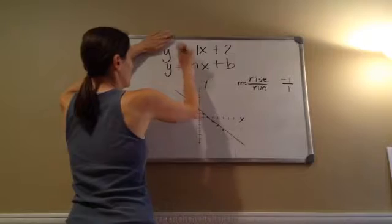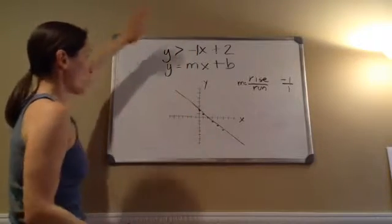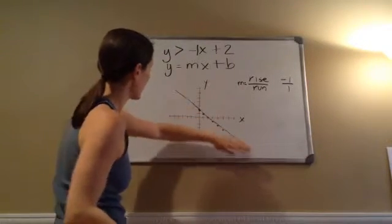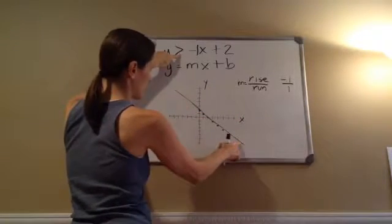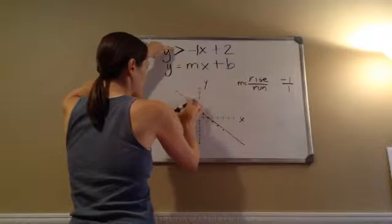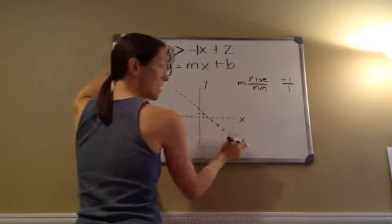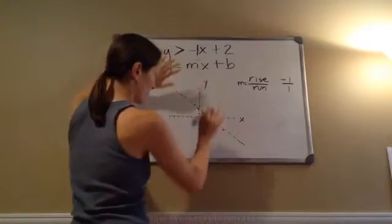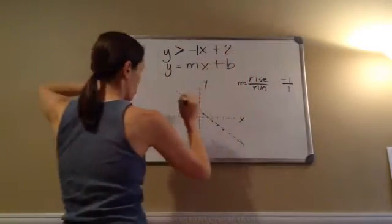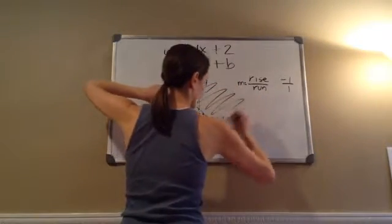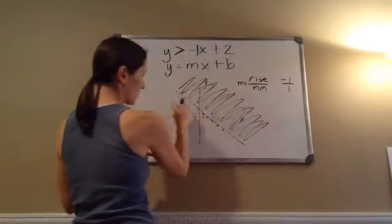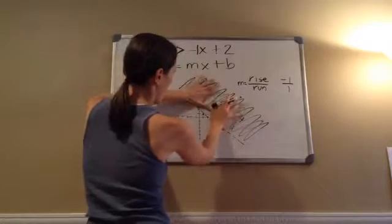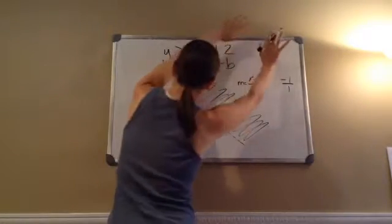Now that I have it graphed, let's go back up and put 'is greater than.' Y — which is what you're going to shade — the shaded part is greater than this line. Is it equal to this line? No, it's just greater than. So I make this line into a dotted line, because if it were equal I would fill it all the way in. But it's not equal, it's just greater than, and greater than is up. So I'm going to fill in my chart like this, shaded, and leave it dotted, because y, the shaded part, is greater than this line.